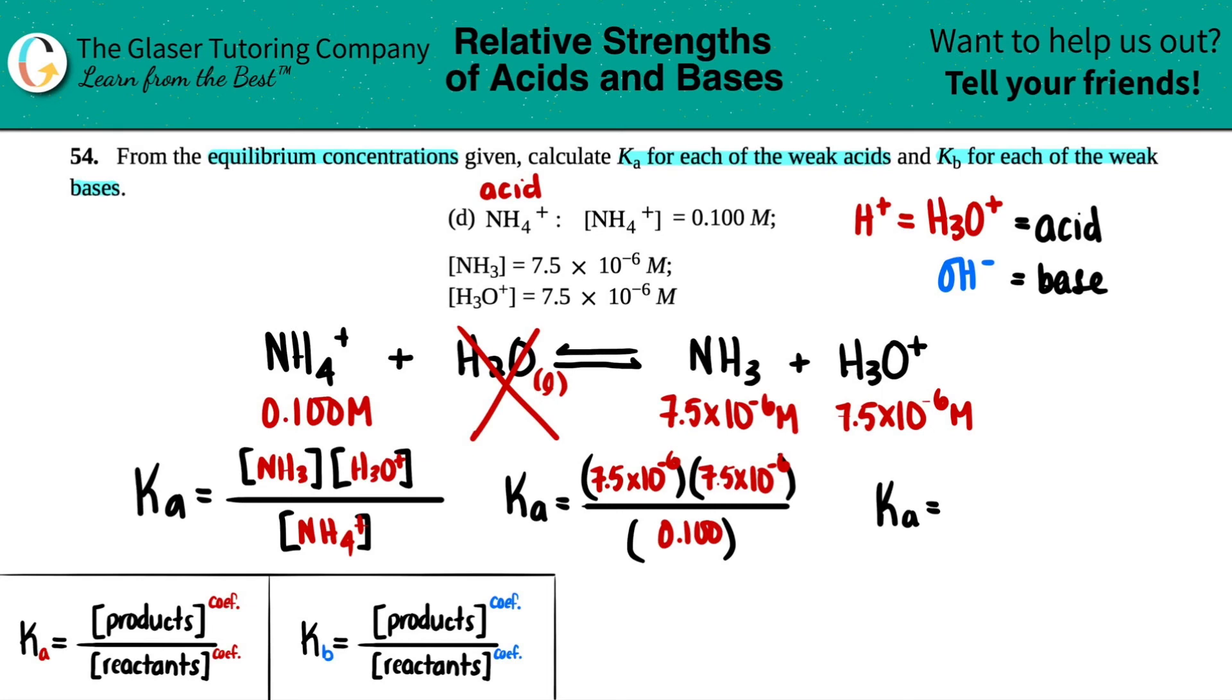We need two sig figs, so 5.6×10^-10. Whoa, this one is really weak. I know that because the exponent is really low, which means that once NH4+ dissociates in water, it doesn't do much.